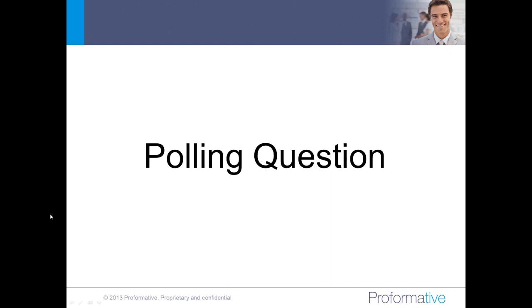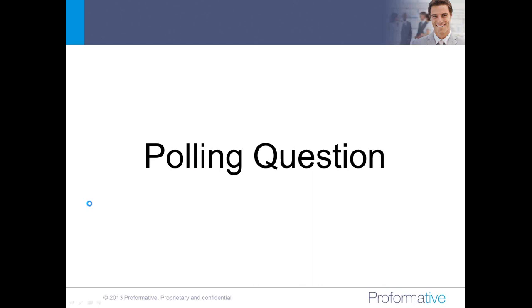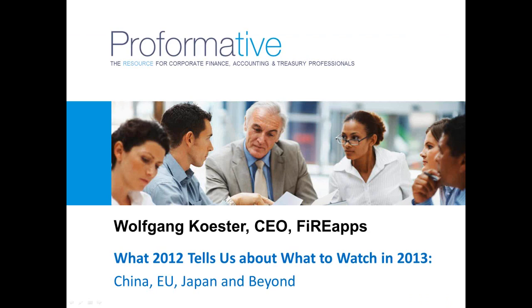Thank you very much, Carl — that was excellent, as always. We do have our first polling question. The question is: which regions concern you most in terms of uncertainty and currency volatility in 2013? Select all that apply. For those here receiving CPE credit, you must take this polling question, but we'd appreciate everyone participating. We'll leave this open for about 40 seconds and then move on to Wolfgang.